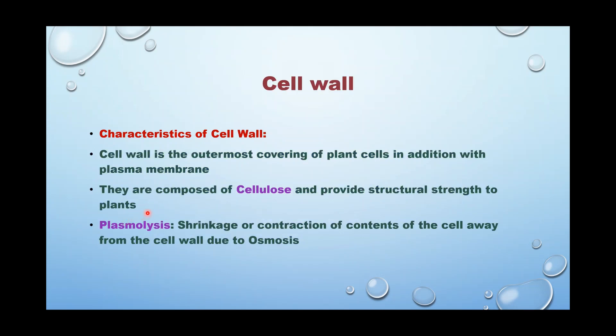Next is the cell wall, which is present only in plant cells. In plant cells, this is the outermost rigid covering because of the presence of cellulose. We also see shrinkage and contraction of cells due to osmosis, and when this happens in a plant cell, it is called plasmolysis.